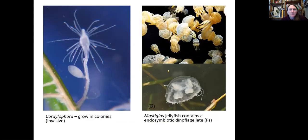Here are a couple pictures of Cordylophora, which grows in colonies and actually can be invasive and reach nuisance levels. And then a jellyfish called Mastigias, which contains an endosymbiotic dinoflagellate that photosynthesizes. So that's pretty cool.